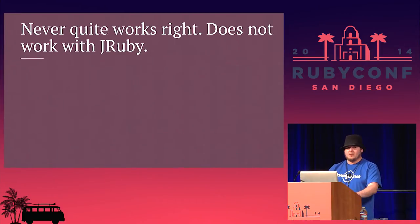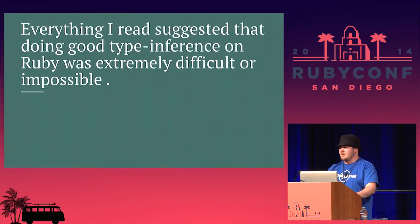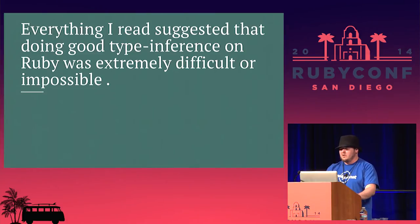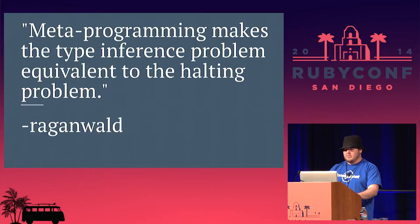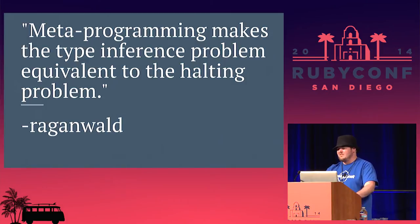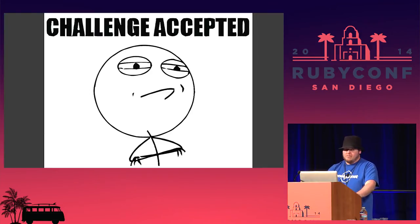So I dug a little deeper. What would it take to make this kind of tool on my own? Everything I read said that to do code completion you have to do type inference, and doing type inference on Ruby was basically impossible. A lot of quotes like this one — metaprogramming makes the type inference problem equivalent to the halting problem. For anyone that doesn't know, the halting problem has been proven mathematically to be basically impossible. But I'm stubborn.